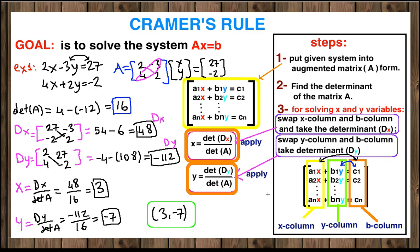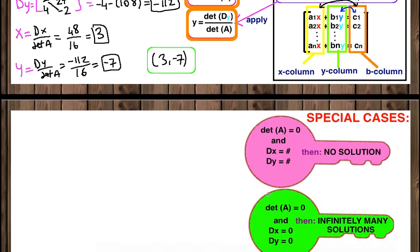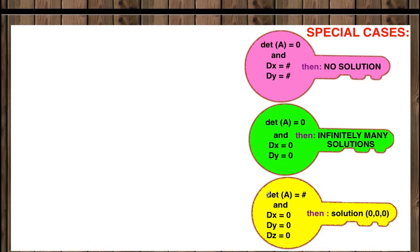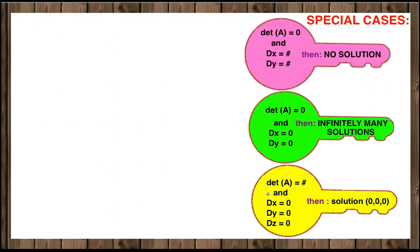Let's talk about the special cases. If the determinant of A is 0 and DX and DY are non-zero, then the system has no solution. If the determinant of A is 0 and DX and DY are both 0 — and for three variables, DZ is also 0 — then the system has infinitely many solutions.